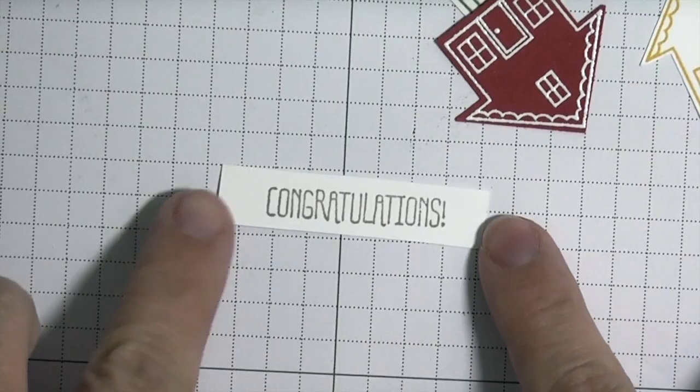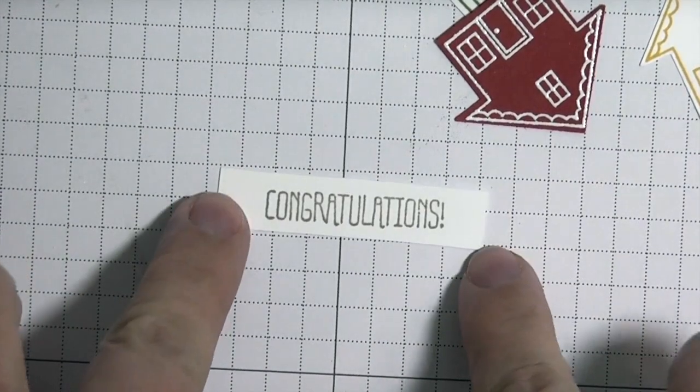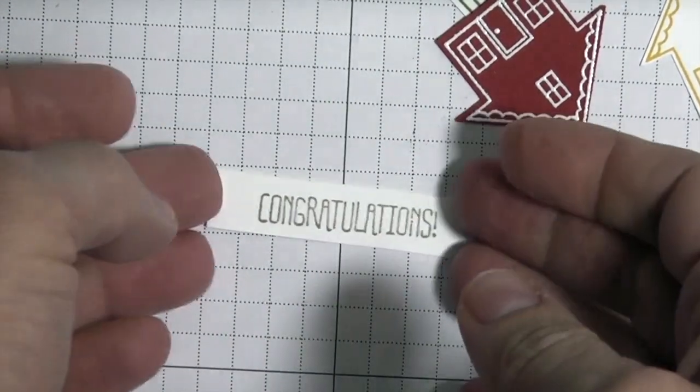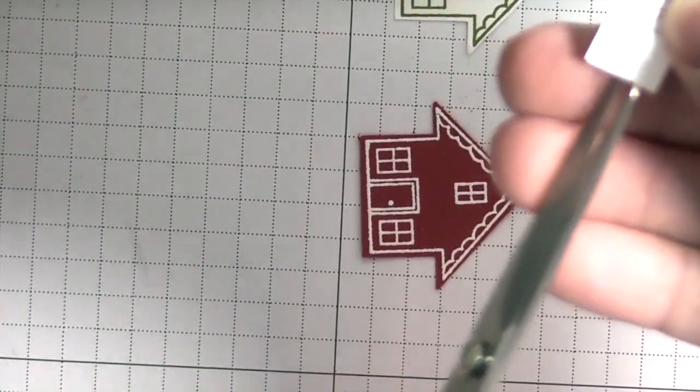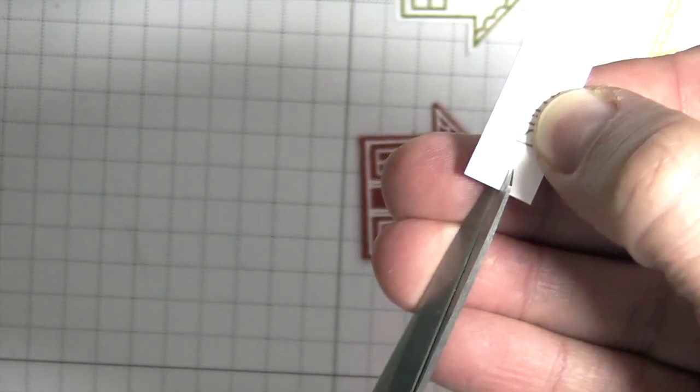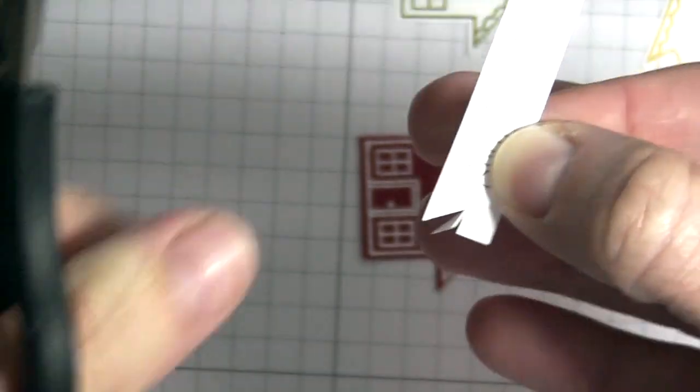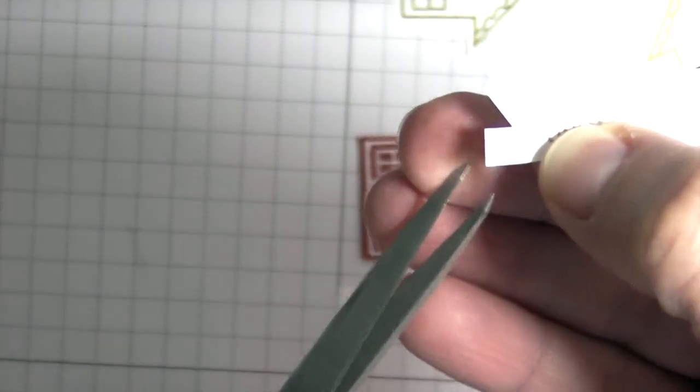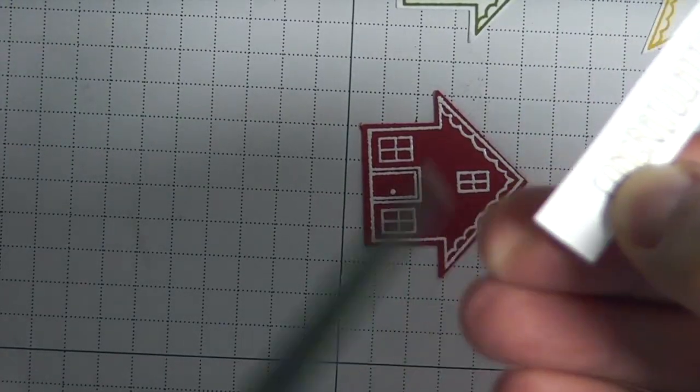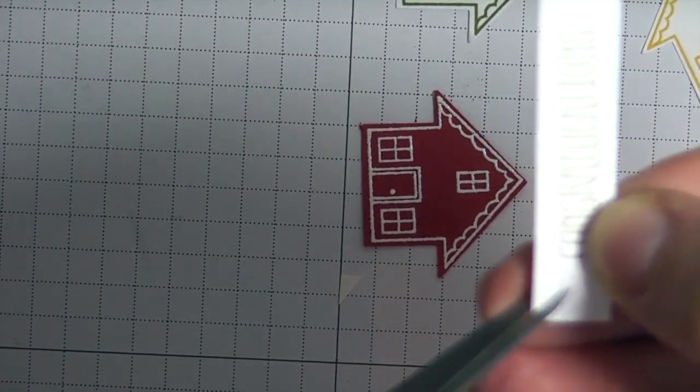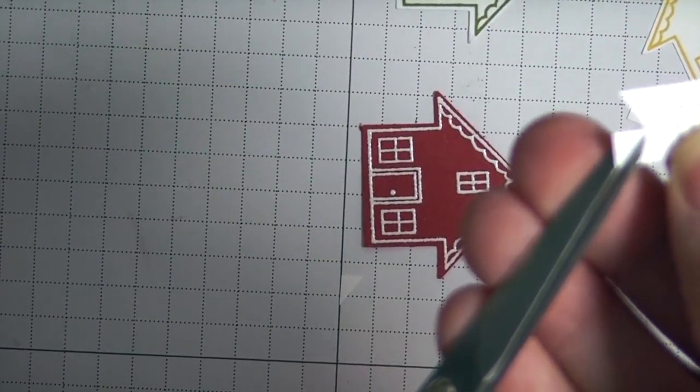I've cut out my congratulations using my trimmer. I get better, straighter edges using that than doing it by hand, but I am going to make the banner edges with my scissors. I just cut right here in the middle and then meet the edges from both sides.